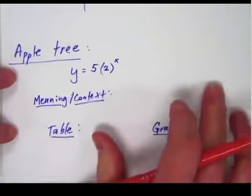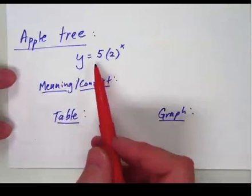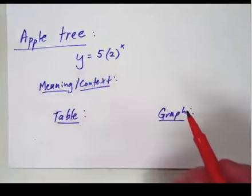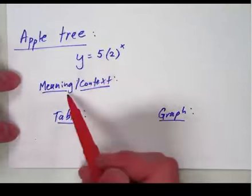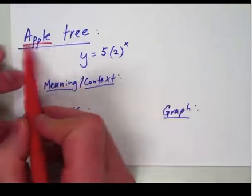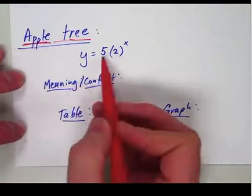Now if we take a look at when we're given an equation, you need to be able to pick it apart. It's called multiple representations. Here is the equation. Can you find the table, the graph, and the meaning or the context? Well, if I give you a clue that this is all about an apple tree, then what we could say is,